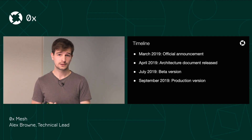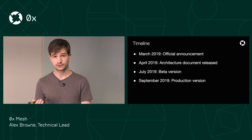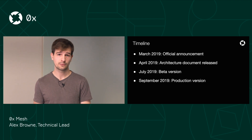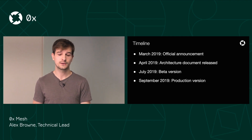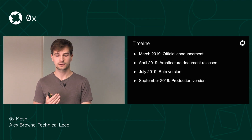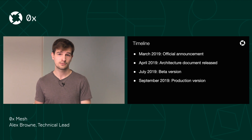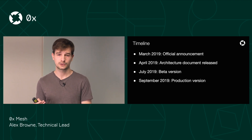We officially announced Mesh in March of 2019, and we released an architecture doc explaining our plans for Mesh and how we're going to build it in April 2019. Just recently — two weeks ago as of filming this video — we released the beta version of Mesh. So right now you can run it and start experimenting with it. There are still a couple of features that we need to add and some improvements to make, and we're planning to launch a full production version in September.